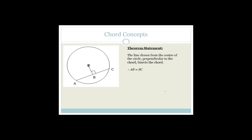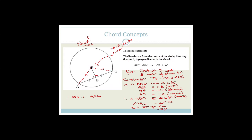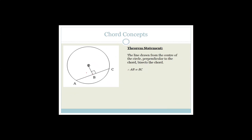This next one is kind of the inverse of the previous one. It says: the line drawn from the center of the circle perpendicular to the chord bisects the chord — in other words, AB equals BC. So in the previous example, if we had a line joining the midpoint of AC it would be perpendicular. Now we're saying if this line is perpendicular, then this is the midpoint.